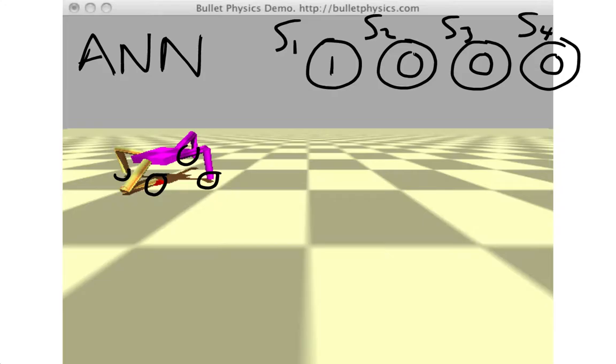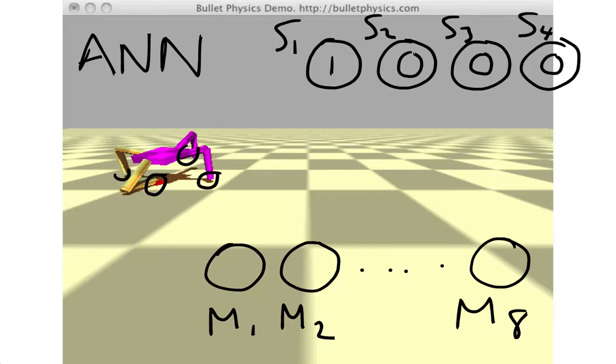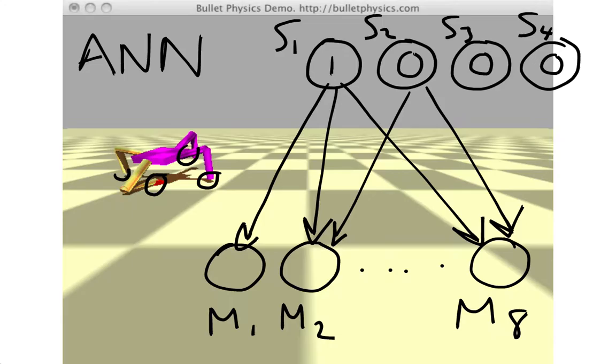Remember that our robot has eight motors, so we're going to add eight additional neurons to our neural network: M1 for motor 1, M2 for motor 2, and so on through M8. So our artificial neural network now has 12 neurons, and we're going to connect every sensor to every motor with a synapse. Since we have four sensor neurons and eight motor neurons, you can convince yourself that we'll need a total of 32 synapses.